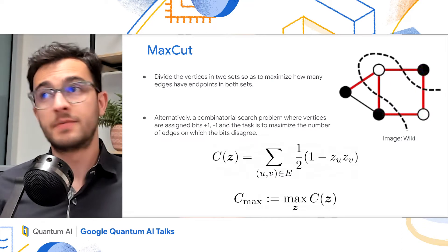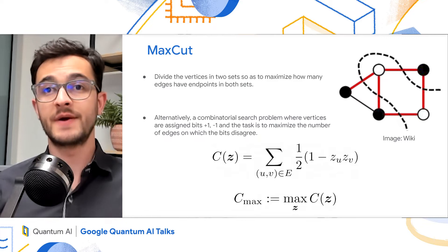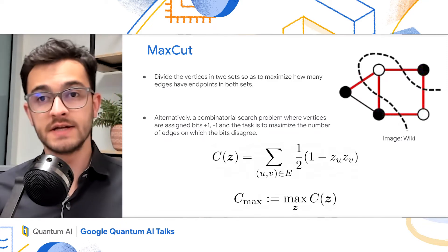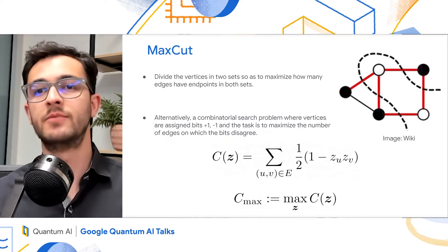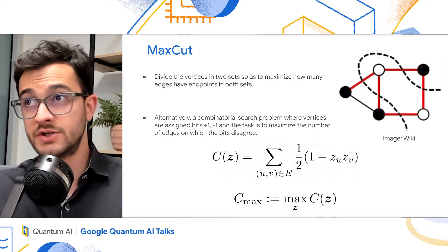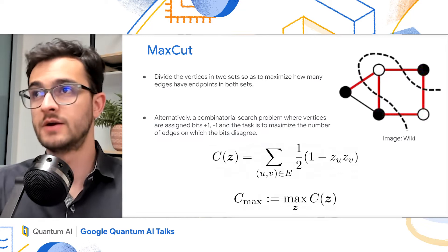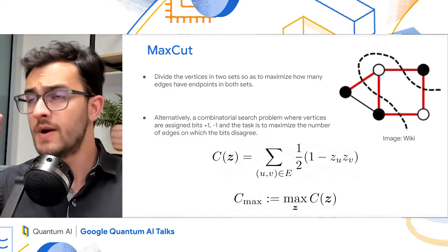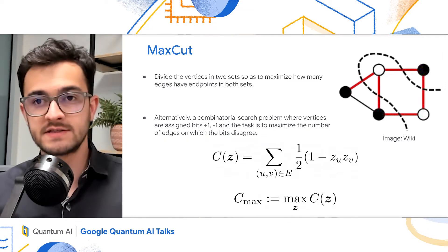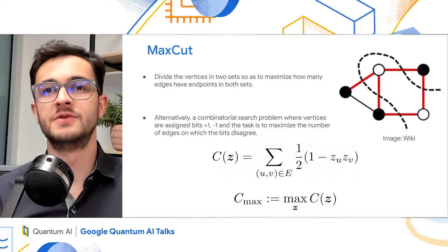Now I'm going to tell you about a problem that seems to be unrelated, but like I mentioned, it would turn out to be related to the SK model. So MaxCut is a graph problem where you want to bipartition the vertices into two sets, in a way that maximizes how many edges have endpoints in different sets. So you can think of each vertex as being a bit, and its cost function on a bit string z is given by that equation. The bits take plus or minus one. So when two vertices are in different sets, their product is going to be minus one, and the term contributes to the cost function.